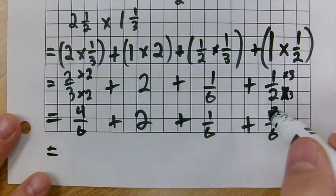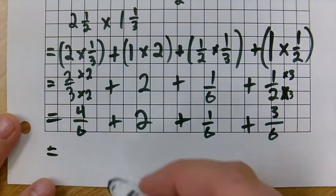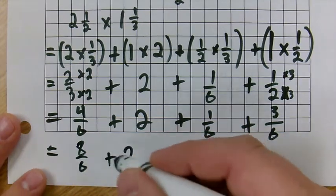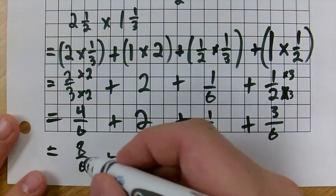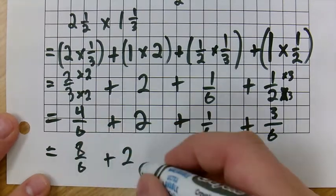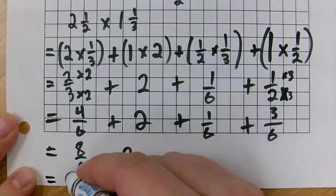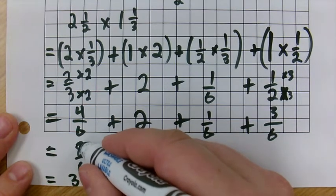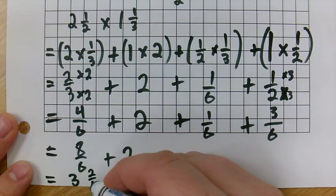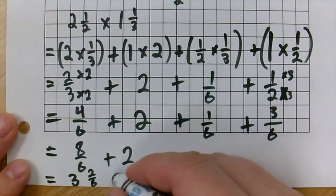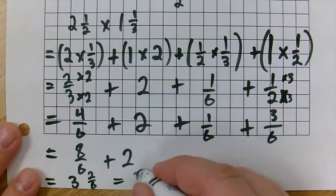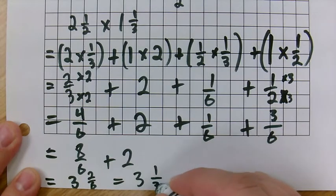We have 4 plus 3 plus 1 is 8 sixths plus 2. And we can take out one group of 6 here, right? We can take one out and make this one bigger. So we have 3. And how many are left over? If we take 6 of these away, there would be 2 left over. So it's 2 sixths. And then finally, can we simplify this 2 sixths? Yes, we can. We can make it 3 and 1 third.